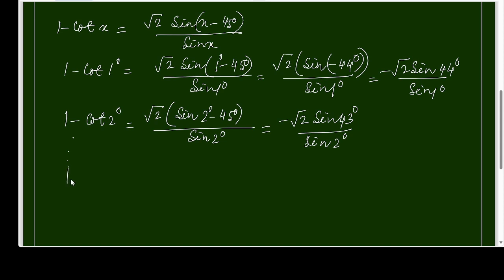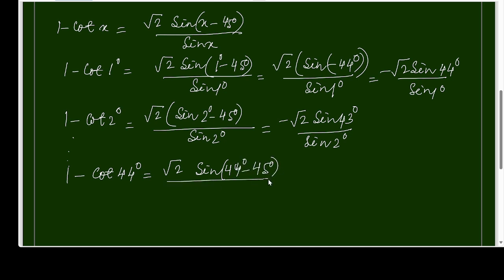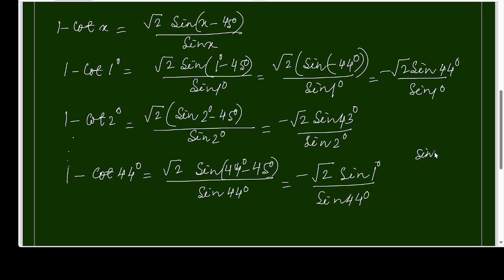Continuing in the same way, for 1 - cot 44°, it will be √2 · sin(44° - 45°) / sin 44°, which is -√2 · sin 1° / sin 44°, again applying sin(-θ) = -sin θ.